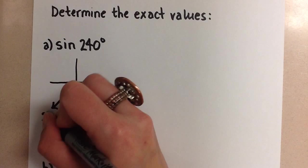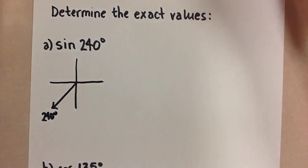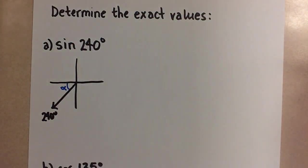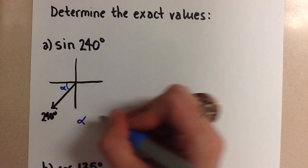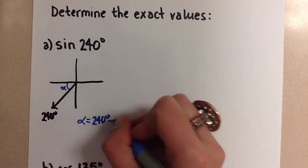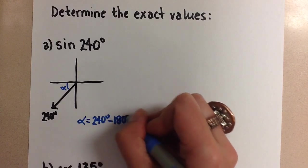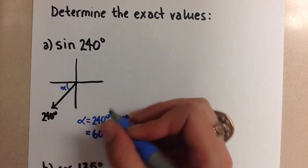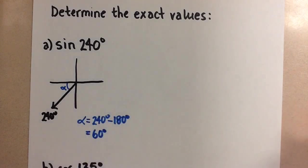And we're really interested in finding that related acute angle right here. So we can call that alpha. And to get that related acute angle for the third quadrant we're going to do 240 degrees minus 180 degrees. And this gives us 60 degrees for alpha which is that related acute angle.